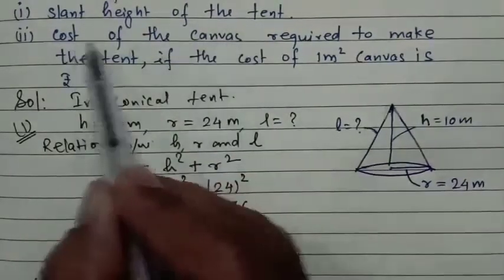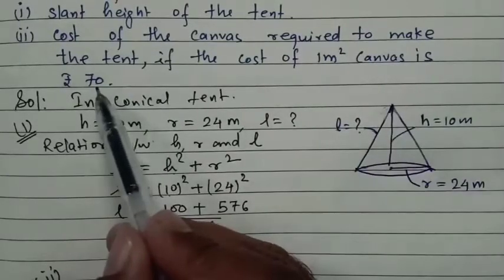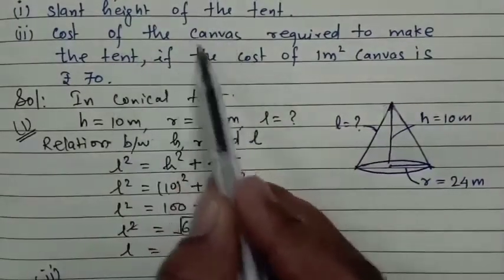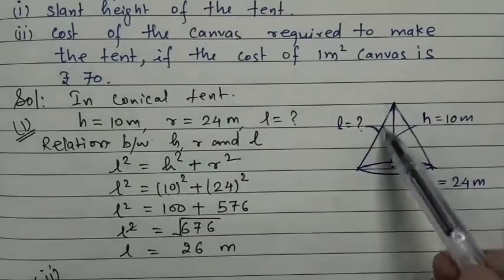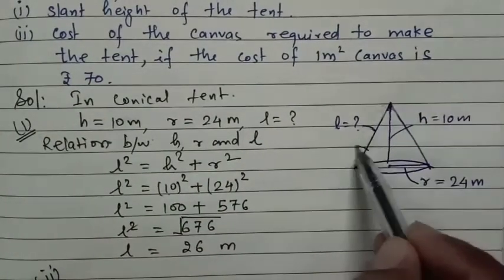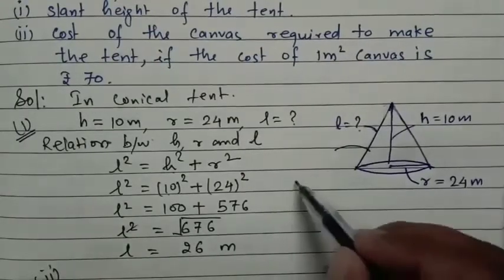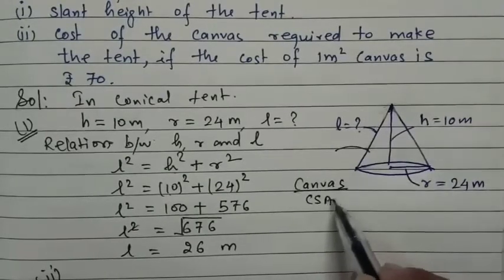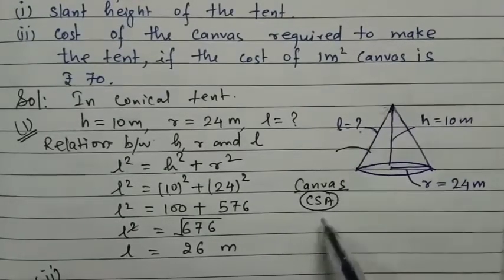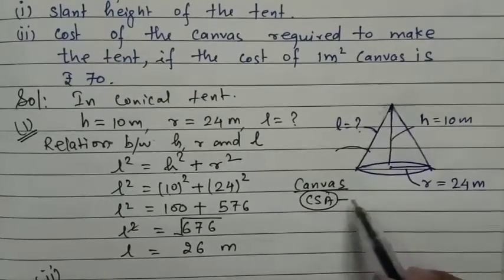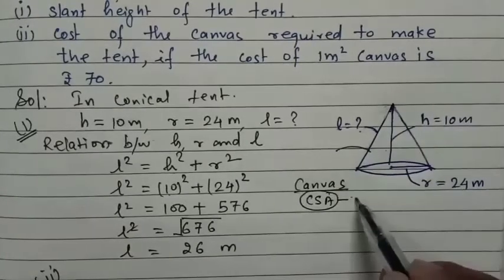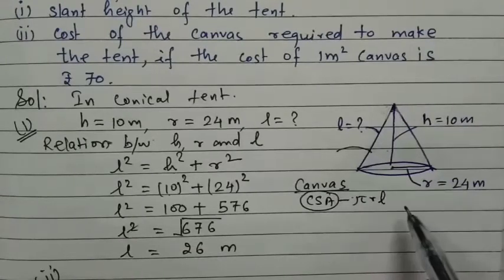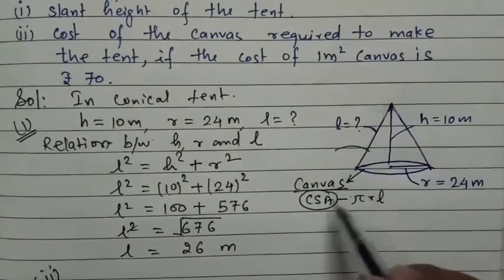Now for the second part — we need to find the cost of the canvas. If 1 meter square canvas costs ₹70, the canvas used equals the curved surface area (CSA) of the cone. The curved surface area of a cone is πrl. We can put the value of π as 22/7.